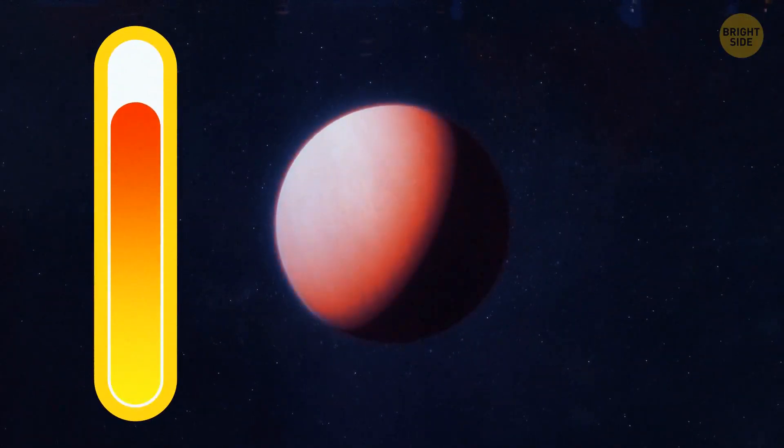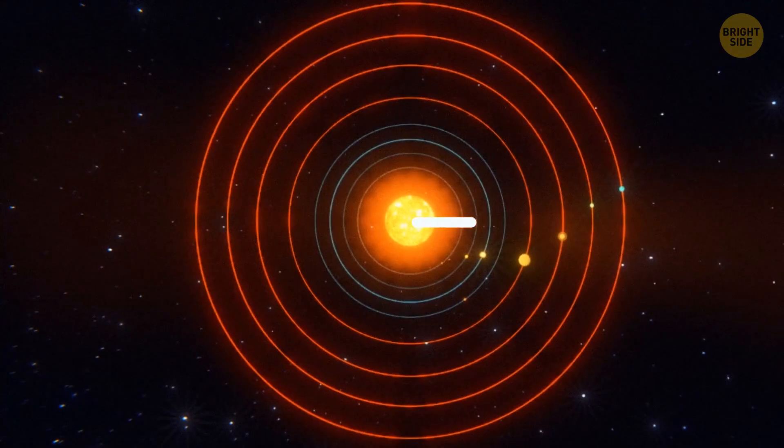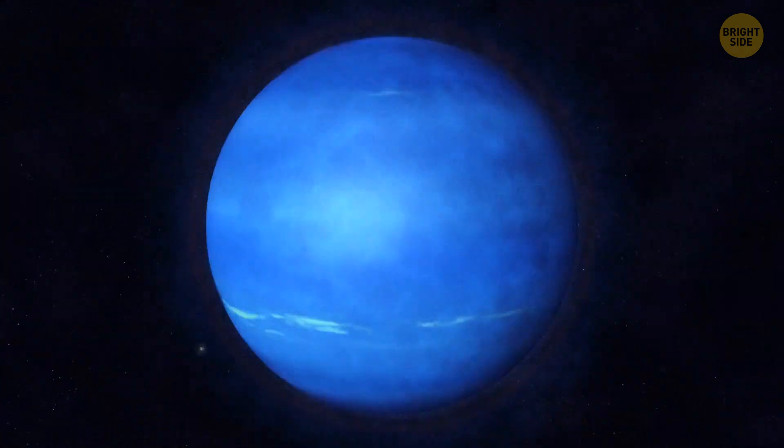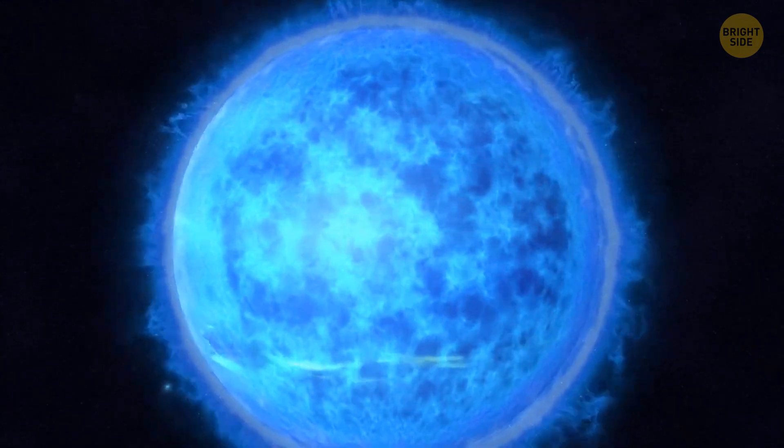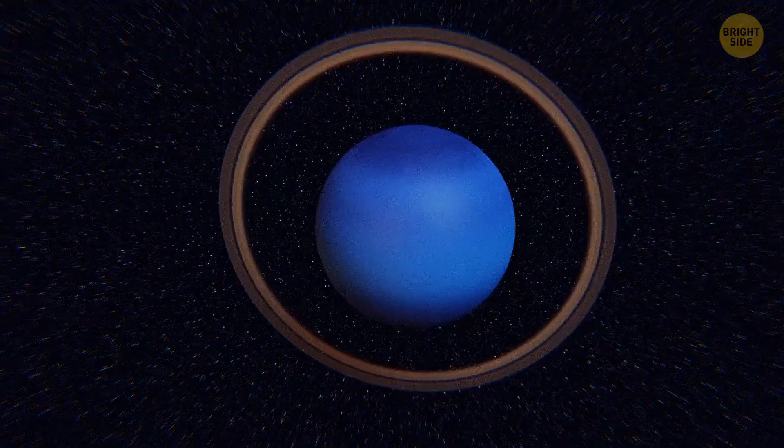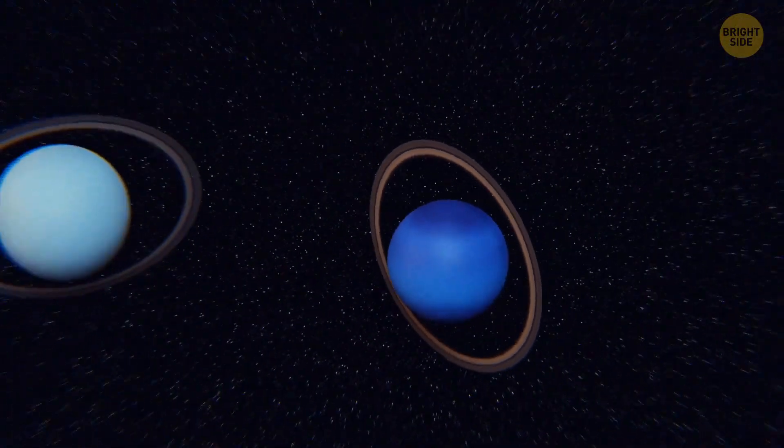Neptune is unexpectedly warm, even though it's 30 times as far from the Sun as our planet and receives less sunlight and heat. But it still radiates way more heat than it gets. It also has way more activity in its atmosphere than you'd suspect, especially if you compare it to its neighbor, Uranus.